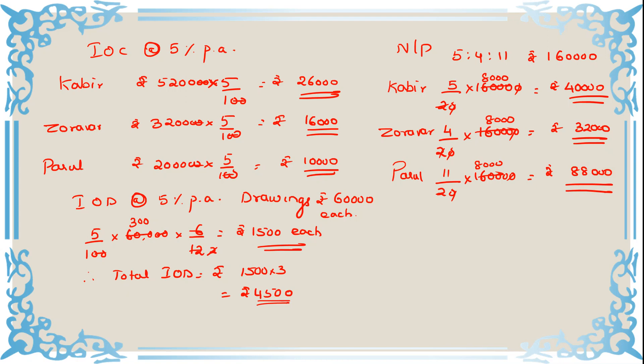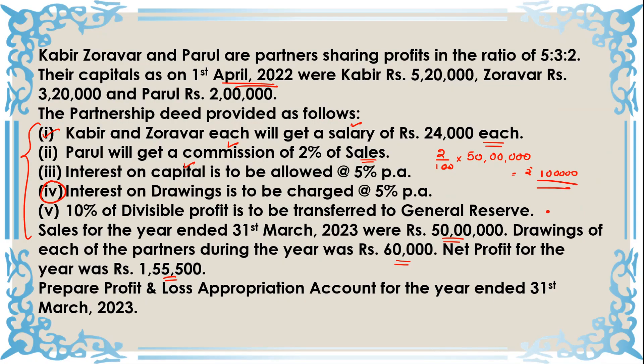There is one more point that was left: 10% of divisible profit is to be transferred to general reserve. When the net profit available is not adequate to cover all appropriation amounts, such transfer to general reserve will not be done — it is skipped. Divisible profit is what remains after removing all appropriations from net profit. In this case, the available profit of ₹1,60,000 was not sufficient to cover appropriations of ₹2,00,000, so there is no divisible profit, and therefore no transfer to general reserve takes place.